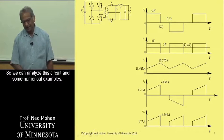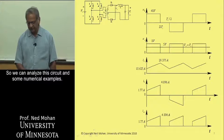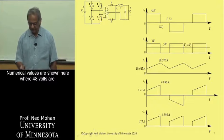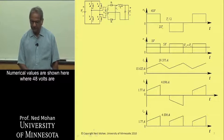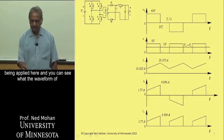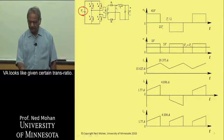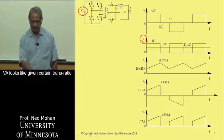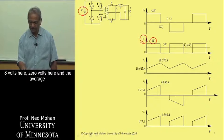In addition, we have this turns ratio over here. So we can analyze this circuit and some numerical example. Numerical values are shown here where 48 volts are being applied here, and you can see what the waveform of VA looks like given certain turns ratio,